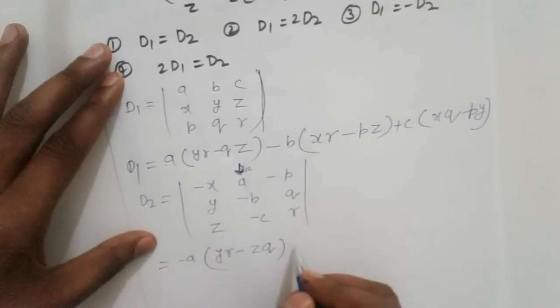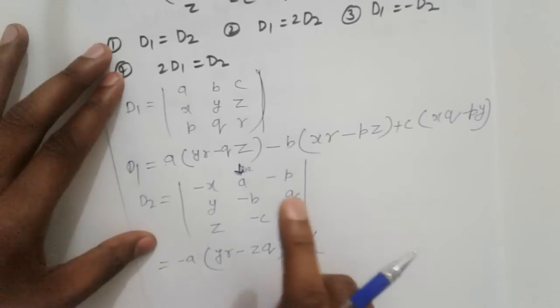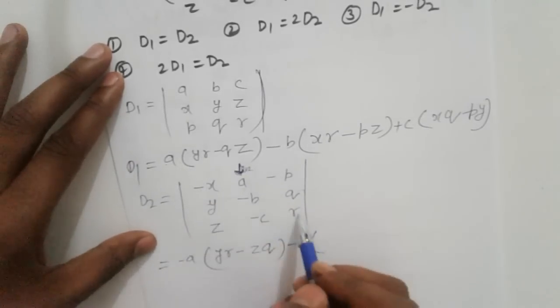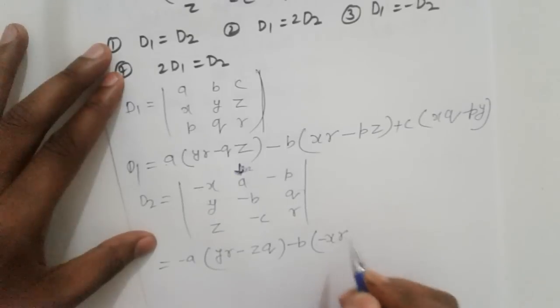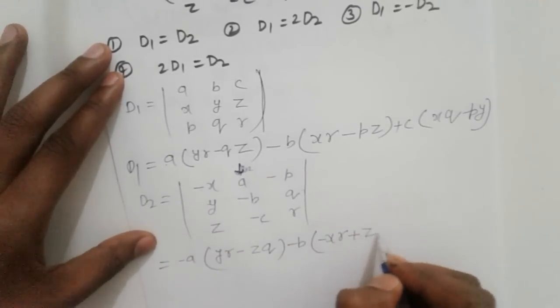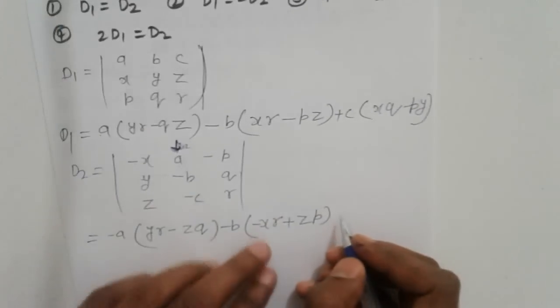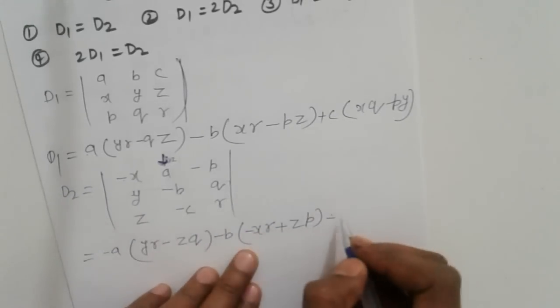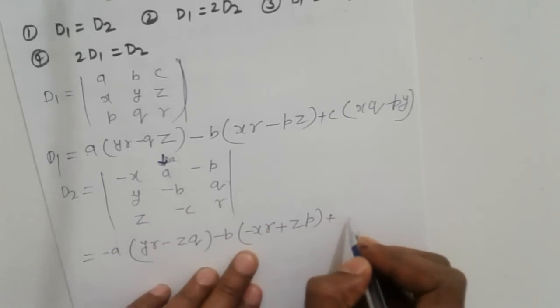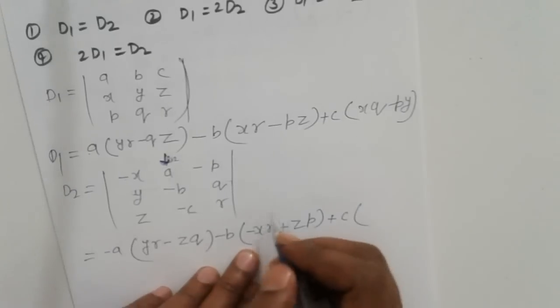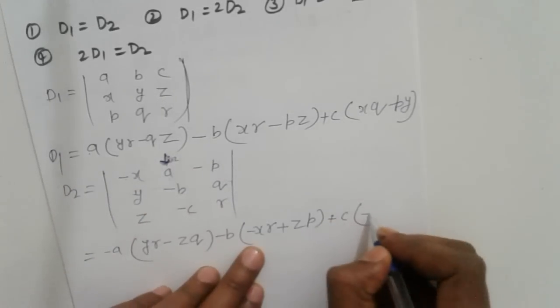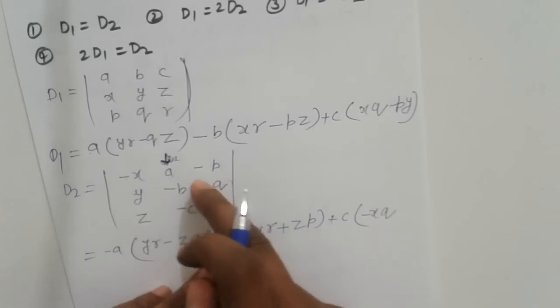Next element A₂₂ which is -B: plus (-B) times (-XR - ZP), obtained by hiding the corresponding row and column. Then minus C times (-XQ + YP).